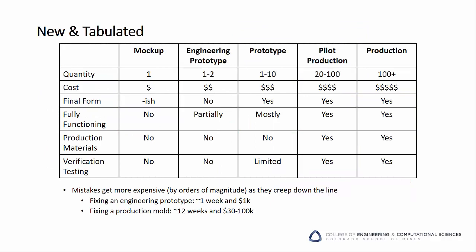As you march toward production of a product, mistakes get more expensive by orders of magnitude. That's why the expense and time of early prototyping is worthwhile. Catching an issue with the design at the mock-up stage is often almost free. As mistakes creep down the line, they cost more and more until fixing a production mold may take 12 weeks and tens of thousands of dollars. So think about your project and have a plan for pulling risk forward. Have a plan for getting input on your design using mock-ups and different types of prototypes throughout the project.